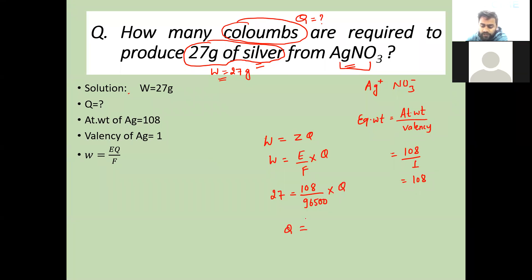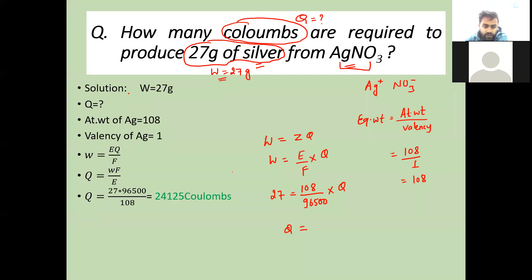Calculating Q, we get the value. Q comes out to 24125 coulombs.